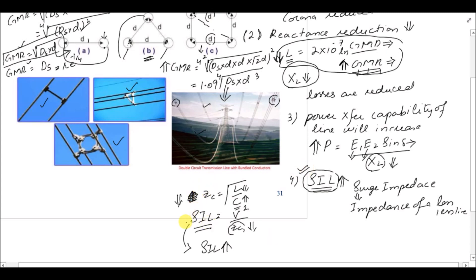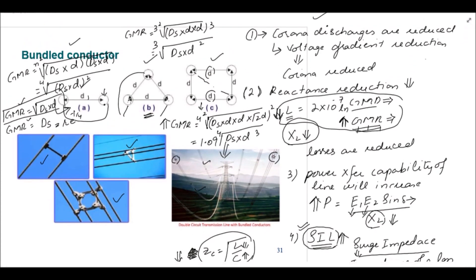We will discuss surge impedance loading and surge impedance of a transmission line in detail in a separate lecture. To summarize: surge impedance is the maximum power transfer capability when the load equals the surge impedance; it is the impedance of a lossless line given by √(L/C); and SIL = V² / Zc. If surge impedance decreases, SIL increases. These are all the advantages of using bundled conductors.